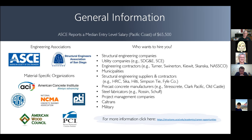Once you finish your undergrad degree, according to the American Society of Civil Engineers, you'll be earning about $65,000 on average. That's more or less what you're targeting. After you complete a master's degree, it could be between $70,000 to $80,000 depending on whether you're in San Francisco or different parts of the state.